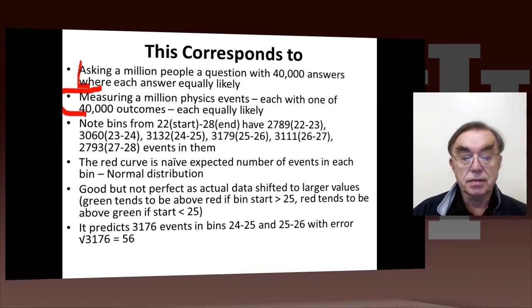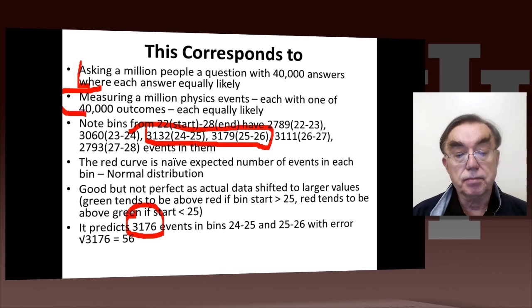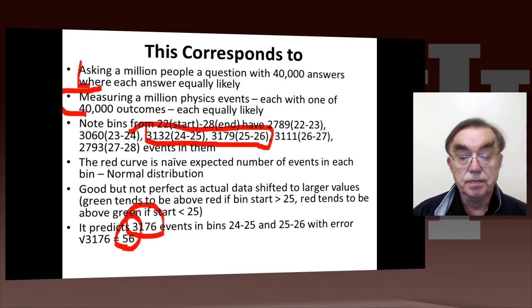Here's what I pointed out: if you look at the middle of the distribution, 24 to 25 and 25 to 26, the red curve expects 3176 events in each of those bins. We observe 3179 and 3132 from our Python code, which is certainly within the square root of 3176, which is 56. So near the middle of the curve, which is really what counts because that's where most of the data is, we get good agreement between the normal distribution and my Python experiment.